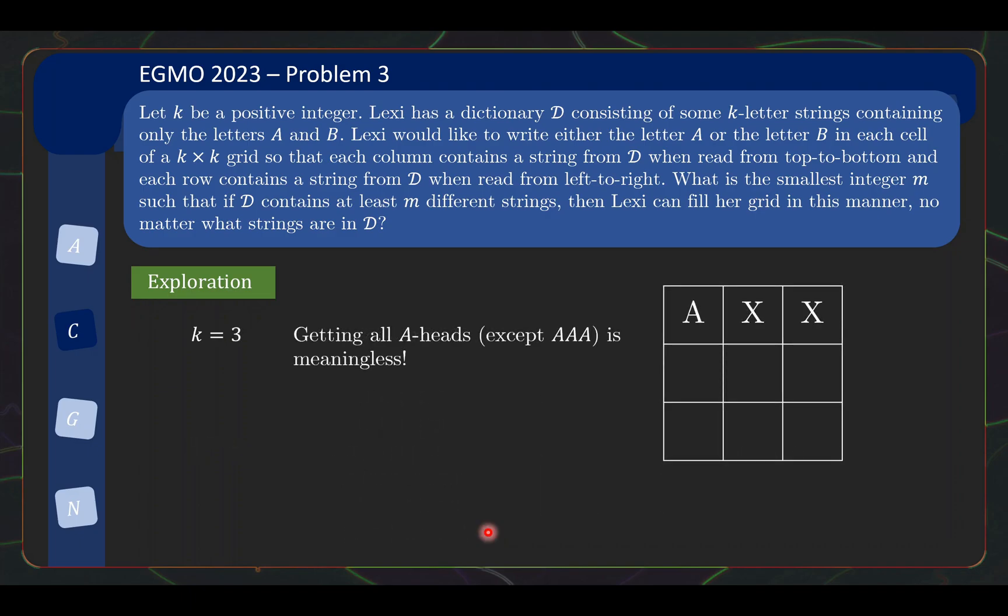So similar to the k equals 2 case, if we have all A's or all B's in the dictionary we are already immediately done. So to make our life difficult, let's say we don't have such luxury.